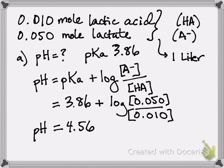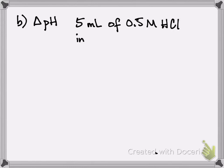In the next part, you're going to add a little bit of strong acid and see what effect that has. So in part B, you're asked to calculate the change in pH when you add 5 milliliters of a 0.5 molar solution of hydrochloric acid. And you're going to add this to that 1 liter from part A.